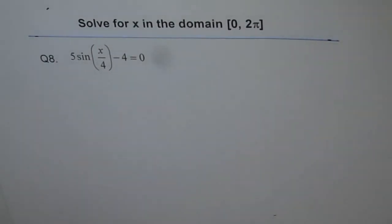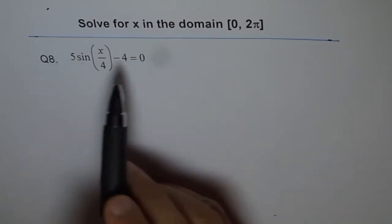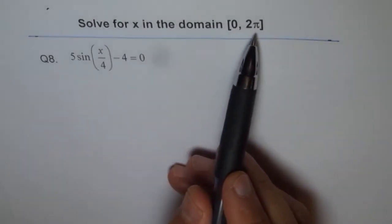Here is question 8: 5 sin(x/4) - 4 = 0. And we need to solve it in the domain of 0 to 2π.